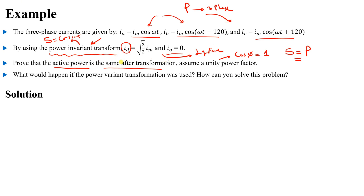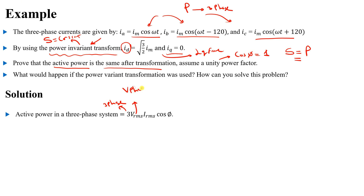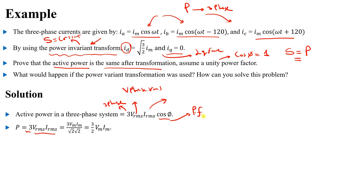From basic electric circuits, we know that active power in a three-phase system equals three multiplied by the phase RMS voltage, multiplied by the phase RMS current, multiplied by cosine φ, which is the power factor. Since the power factor is unity, cosine φ = 1, the current and voltage are in phase, so the equation simplifies to P = 3 × Vrms × Irms.